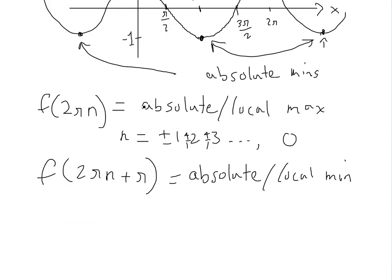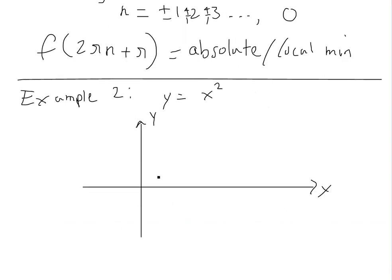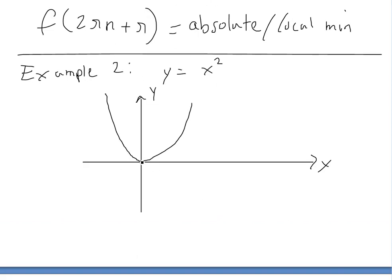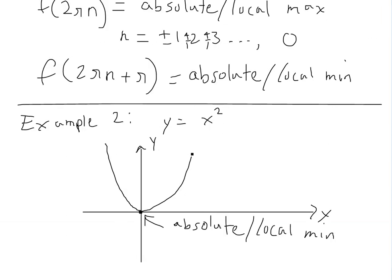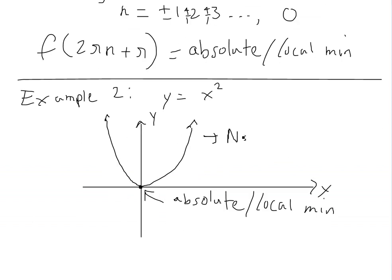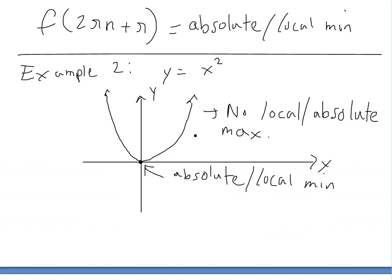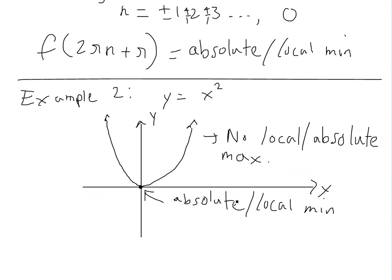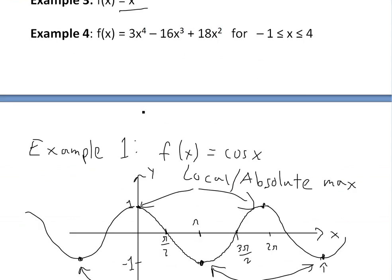Now let's look at example two: x squared. If you graph x squared, at x equals zero it's zero and it goes up like a parabola. This point at the origin is both an absolute and local minimum, because anywhere near zero the value is higher. Since the function keeps going higher and higher in both directions, there is no local or absolute maximum.